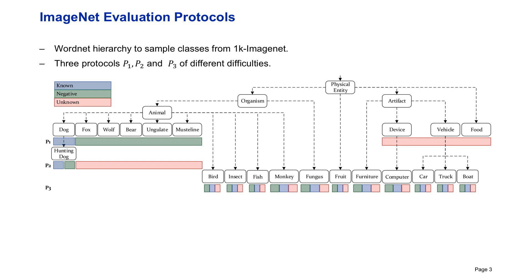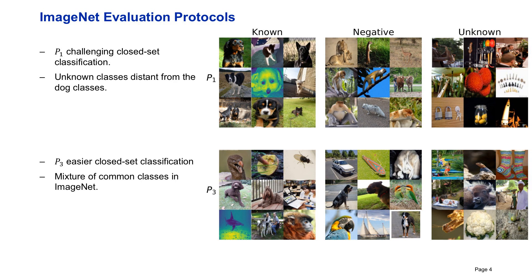In protocol one, the unknown classes are semantically distant from the known and negative classes, while protocol two is the smallest and the known and unknown classes share similar features, and protocol three samples descendant classes of a common ancestor for every partition. The intuition of protocol one is that the closed set task should be challenging since the known classes are similar between each other. In principle, the open set task is easier in this protocol.